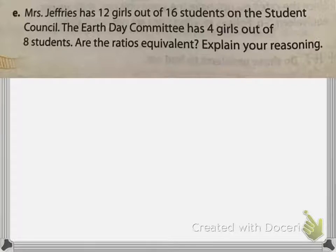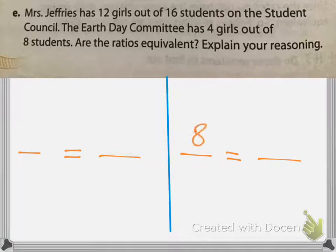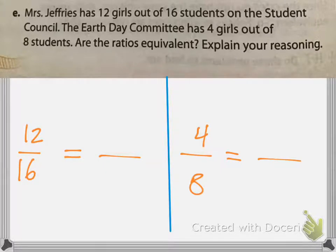Mrs. Jeffries has 12 girls out of 16 students on the student council. The Earth Day committee has 4 girls out of 8 students. Are these ratios equivalent? Our two initial ratios are 4 over 8 and 12 over 16. We're not getting the unit rate here — we're simplifying as much as we can. This is our part and this is our whole; that's how we write our fractions: part over whole.